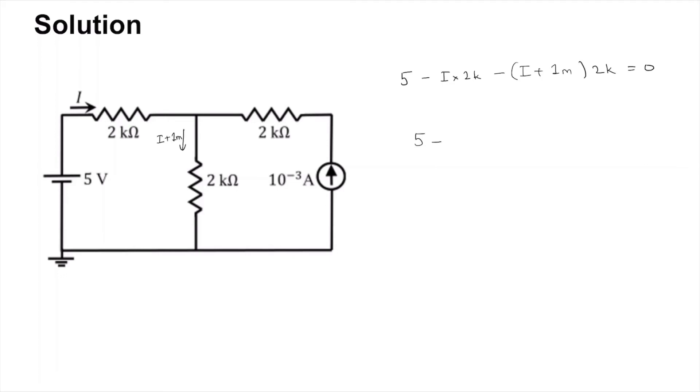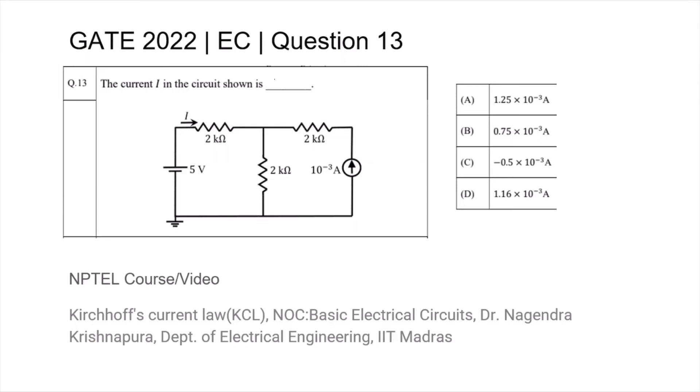So what you will get is 5 minus 2 is equal to I into 2k plus 2k. Therefore, I is equal to 3 by 4k, which is 0.75 milliamps. Thus the answer is 0.75 milliamps, which is option B.